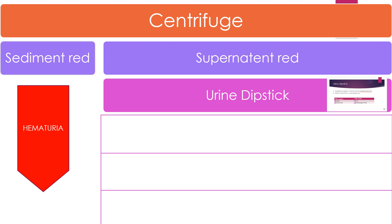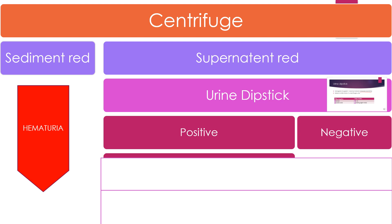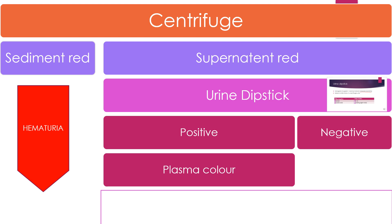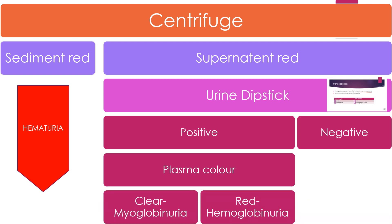We'll look at what urine dipstick means. If the urine dipstick turns out positive, it means there is either hemoglobin or myoglobin. To differentiate, check the plasma color of the child's blood. If the plasma color remains clear, it is myoglobinuria; if it remains red, it is hemoglobinuria. Myoglobinuria happens secondary to crush injuries, hypothermia, or any muscle injury, and you will have a history of that.